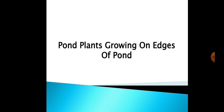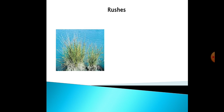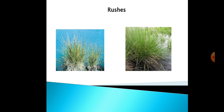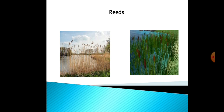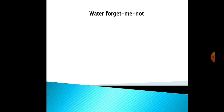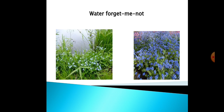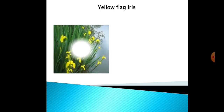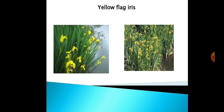The next category is plants growing on the corners or edges of the pond. The first example is rush, found at the edge of the pond. Next is reeds, growing around the edges. Then water forget-me-not, also growing at the edge. And yellow flag iris, found at the corner of the pond water.